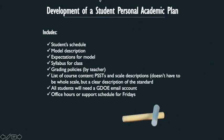Development of a student personal academic plan. In their plan, we need to make sure that included are the student schedules, model description, and expectation for model. We also want to make sure your syllabus is included, your grading policies, and a list of your content priorities, skills, standards, and topics. All students will be afforded a GDOE email account, and we need to make sure that they're able to access it. We also want to make sure that if they have anything to clarify, we provide office hours and when those will be available.